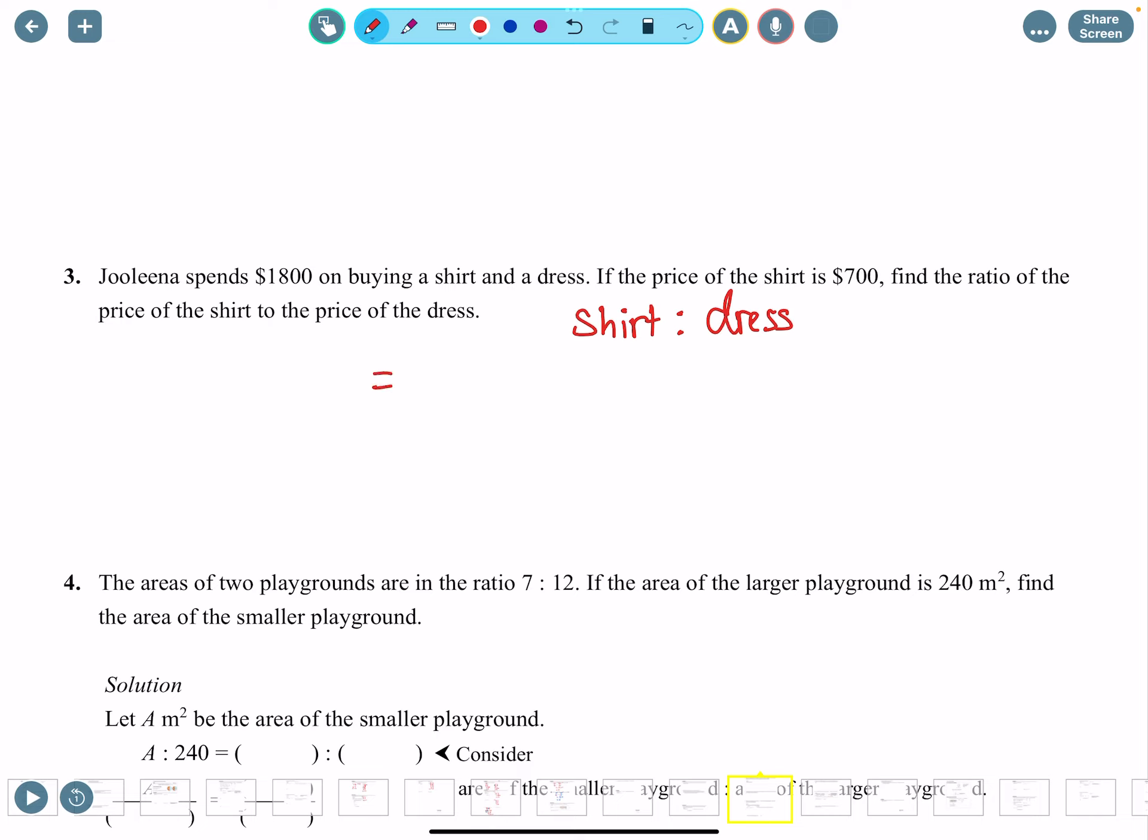We want to find the price of the shirt divided by the price of the dress. Price of the shirt is given: $700. If she spends $1,800 in total, what's the price of the dress? Kind of common sense - $1,800 minus $700. Simplify this: 700 over 1,100. Use your calculator: 7 over 11. So the ratio you want is 7 to 11.